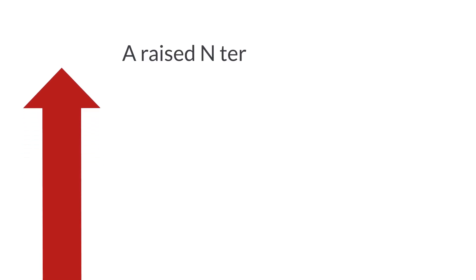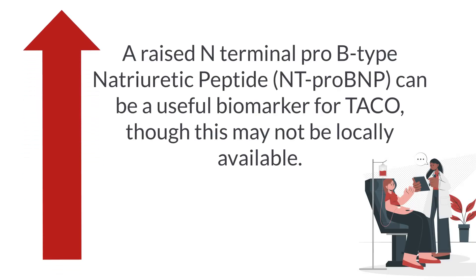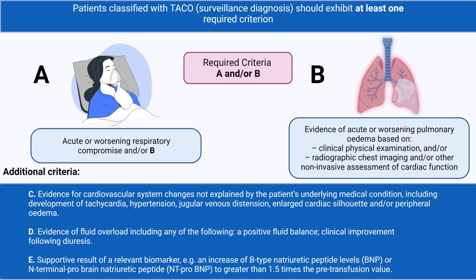A raised NT-proBNP can be a useful biomarker for TACO, though this may not be locally available. These are the criteria used to evaluate whether the reaction meets the haemovigilance surveillance definition of TACO. Acute or worsening respiratory compromise and/or acute or worsening pulmonary oedema must be present, with additional evidence of cardiovascular system changes, fluid overload, or a relevant biomarker such as raised NT-proBNP.